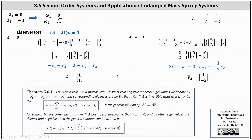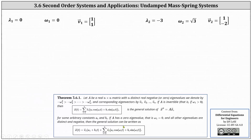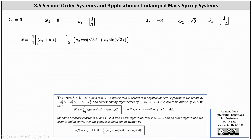Now we have all the information needed to determine the general solution. Using the formula for x of t when omega one equals zero, vector x equals the first eigenvector one, one times the quantity a1 plus b1 t, plus the second eigenvector one, negative two times the sum of a2 times cosine of square root three t and b2 times sine of square root three t. Notice we use square root three because omega two is square root three.